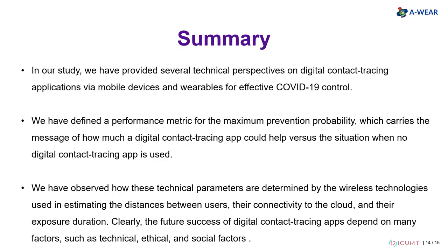In our study, we provided several technical perspectives on digital contact tracing applications via mobile devices and wearables for effective COVID-19 control. We defined a performance metric for the maximum prevention probability, which carries the message of how much a digital contact tracing application could help versus the situation when no digital contact tracing app is used. We observed how technical parameters are determined by the wireless technologies used in estimating distances between users, their connectivity to the cloud, and their exposure duration.